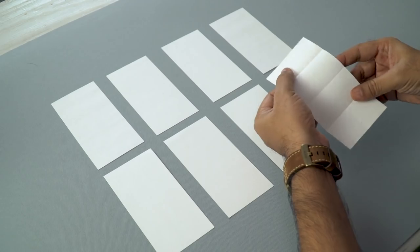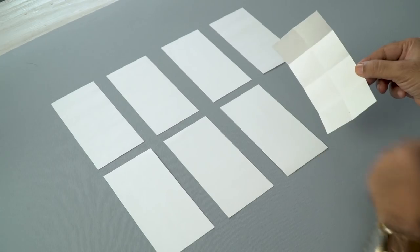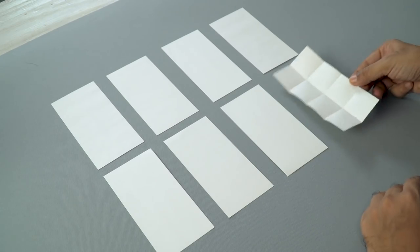Like that. And the same thing we'll do for the bottom half. And when I open it, you can see that we have divided this into eight equal parts. And we have to do the same thing for all the pieces. So let's do that.